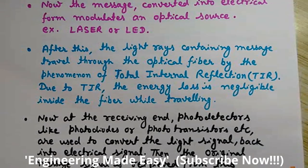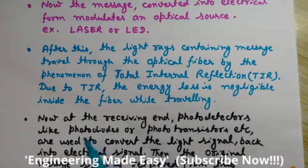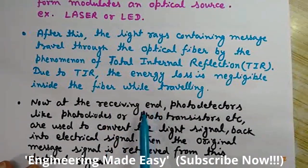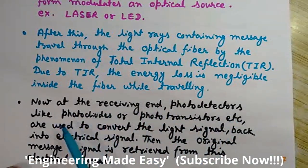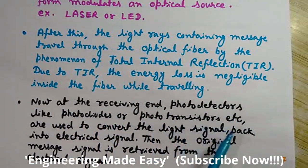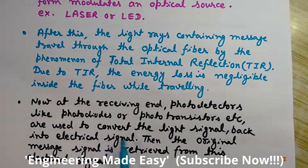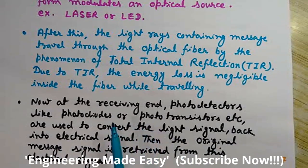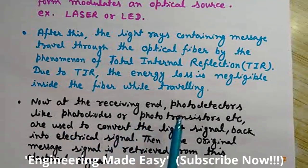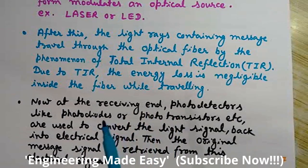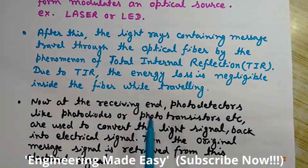Now at the receiving end, photo detectors like photodiodes or phototransistors are used to convert the light signal back into the electrical signal. Since we have the light rays, we need some mechanism to retrieve our electrical signal back. So first of all we need to convert this light energy into electrical energy.